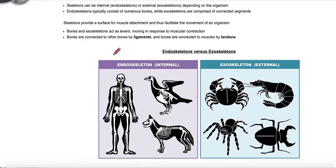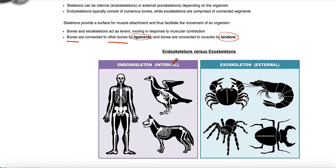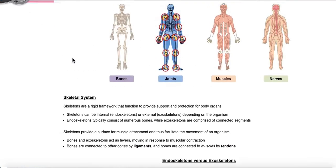You need to remember some of these connections that facilitate movement. You need to know the difference between a ligament and a tendon. A ligament is a type of connective tissue that connects bones to other bones, and a tendon is what connects bones to muscles. That's pretty much it for this essential understanding.